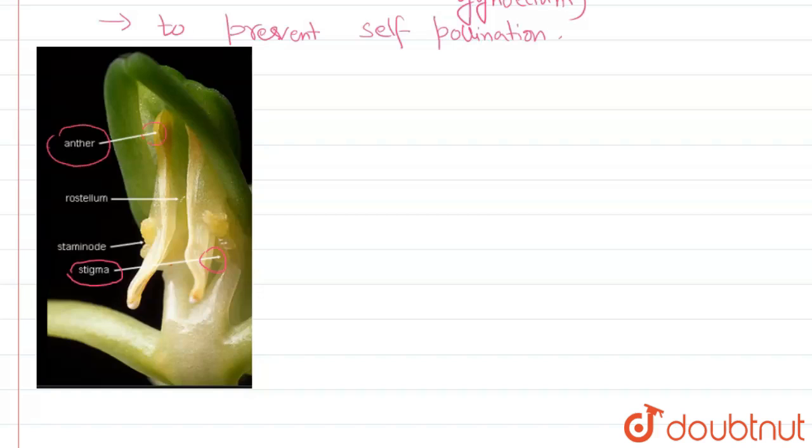All right. Now this portion - it's very small in the diagram, but it has been marked that this is the rostellum, the organ or portion we are talking about in this question.